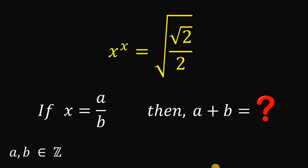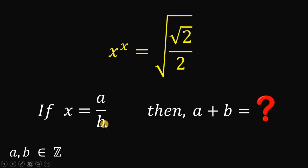Good day everyone. Today we will answer this algebra challenge, and the question goes like this: Given the equation x raised to x equals square root of square root of 2 over 2, then if x is equivalent to a over b, wherein a and b are both integers, then what is the value of a plus b?